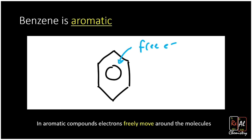This gives benzene really unique properties. It makes the electrons in benzene relatively low energy and allows those electrons to conduct electricity. For example, if you've ever seen an OLED TV or you have an OLED screen on your smartphone, those are actually made of compounds like benzene — organic compounds that conduct electricity.